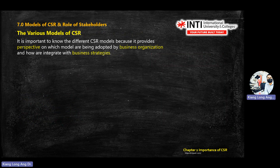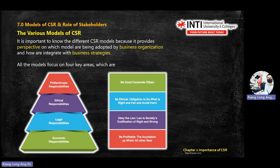Now we learn about the shapes of the models — this is important and popular for your final exam and quiz. Before we go into the shapes, there are four elements inside these models that don't change much: philanthropic responsibility, ethical, legal, and economics. Later when we talk about models, these four elements stay within the models — philanthropic, ethical, legal, and economics — only the size will change.